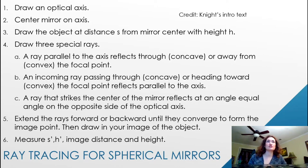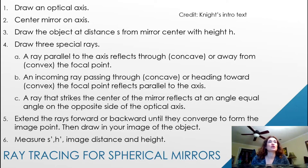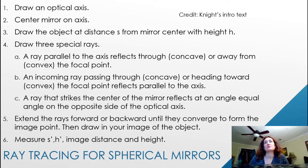Step one: just like with lenses, draw an optical axis. This optical axis should be perpendicular to the mirror. Center the mirror on the axis, and draw the object at a distance s from the mirror center with height h.